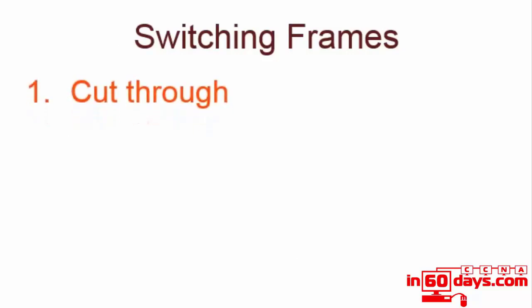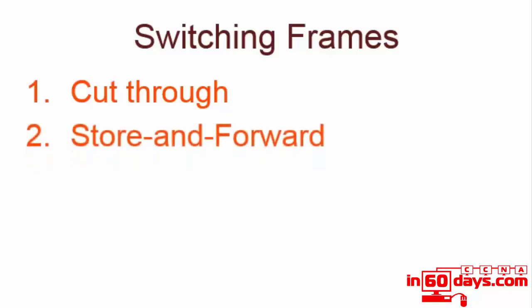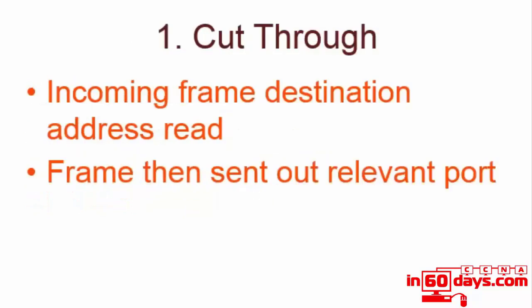Switches have three choices for switching technology at layer two for actually putting frames on the wire: cut-through, store-and-forward, or fragment-free. Cut-through reads the incoming frame's destination address and then sends the frame out the relevant port. The advantage is it's very quick because the entire frame doesn't have to be copied and checked for errors. However, if there are errors on the frame, they are forwarded. Only the six-byte destination address portion of the frame is read.